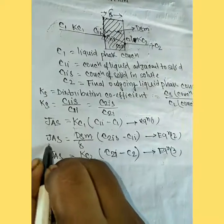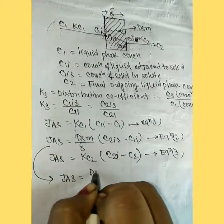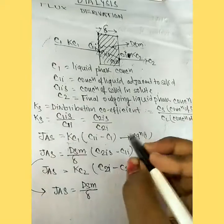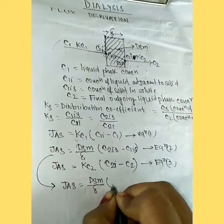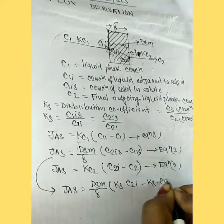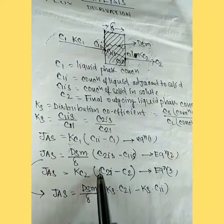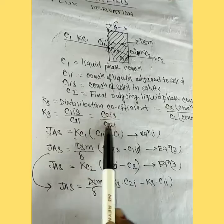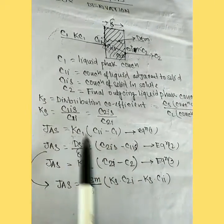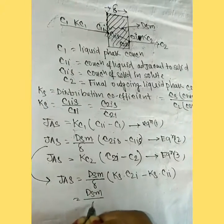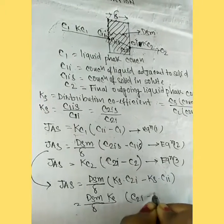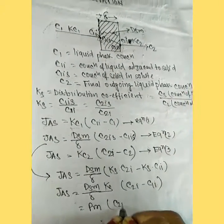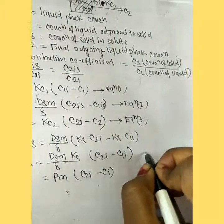From equation 1, we can write C2IS - C1IS = (δ/Dsm) × Kf × (C2I - Kf × C1I). We denote this long term as Pm, so Pm = Dsm × Ks / δ. Pm is known as permeability.